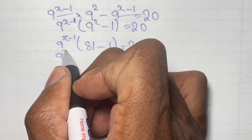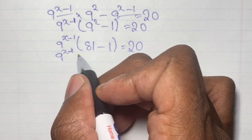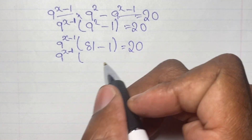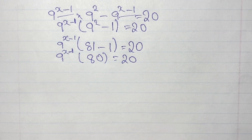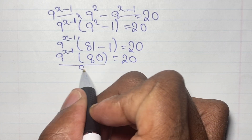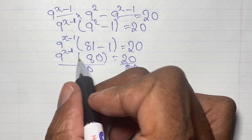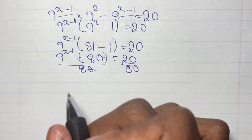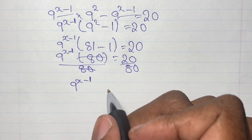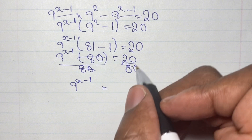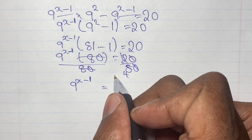So we have 9 to the power of x minus 1, and in our brackets 81 minus 1 gives us 80, so we have all of that equal to 20. Now we can divide both sides by 80. The 80 cancels on the left, and on the right we have 20 over 80, which gives us 1 fourth — or a quarter. So 9 to the power of x minus 1 is equal to one quarter.